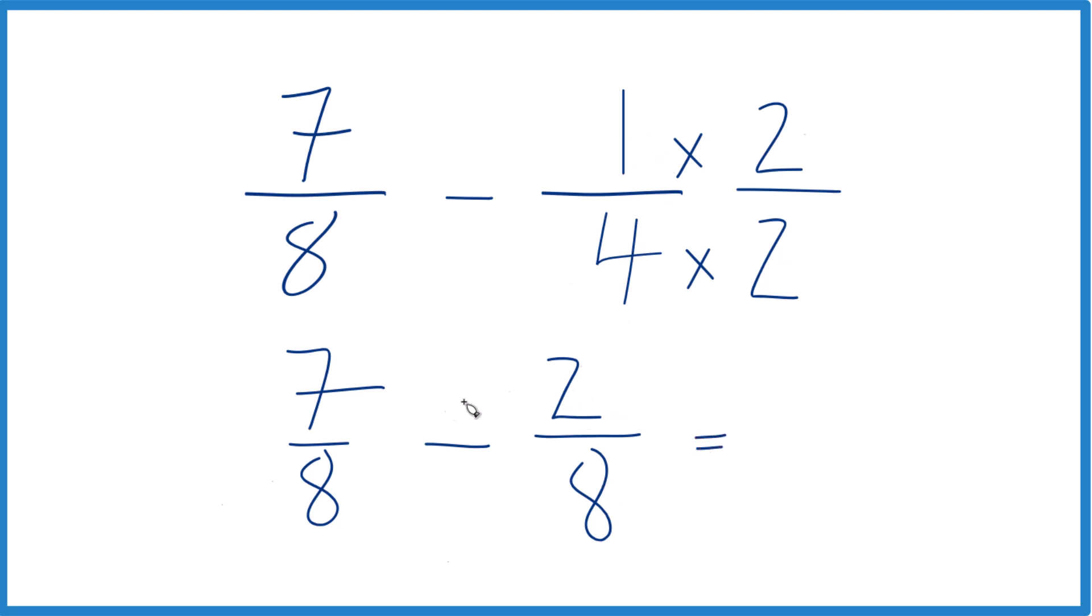But the subtraction is easy because 7 minus 2 is 5, then we just keep the 8 the same. We end up with 5 eighths. So, 7 eighths minus 1 fourth, that equals 5 eighths.